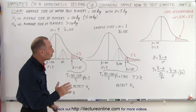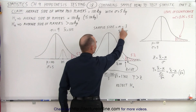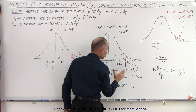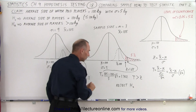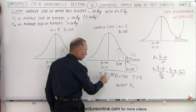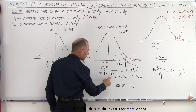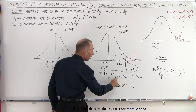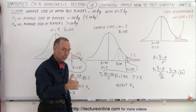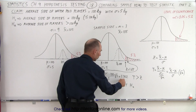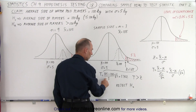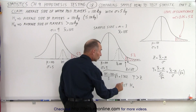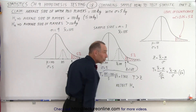Now what happens when we go to a sample size of 3? The mean of the sample is still 105, that hasn't changed, but now when we calculate the test statistic — the difference between the sample mean and the population mean divided by the standard deviation, which is still 1 — we multiply that times the square root of 3. The sample size has now grown to 3, which is 1.732 multiplied times 1, so the test statistic has grown to 1.732.